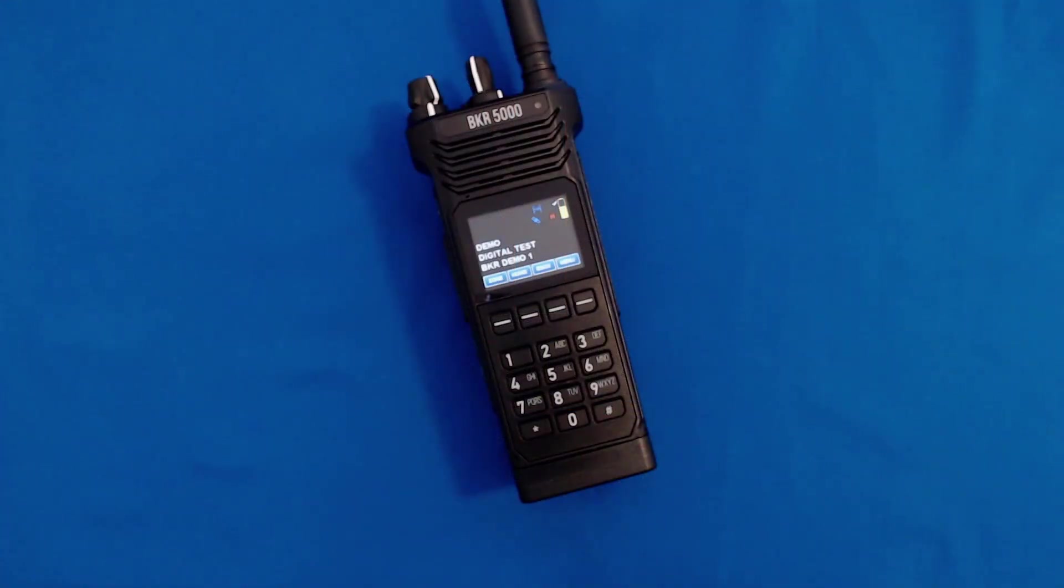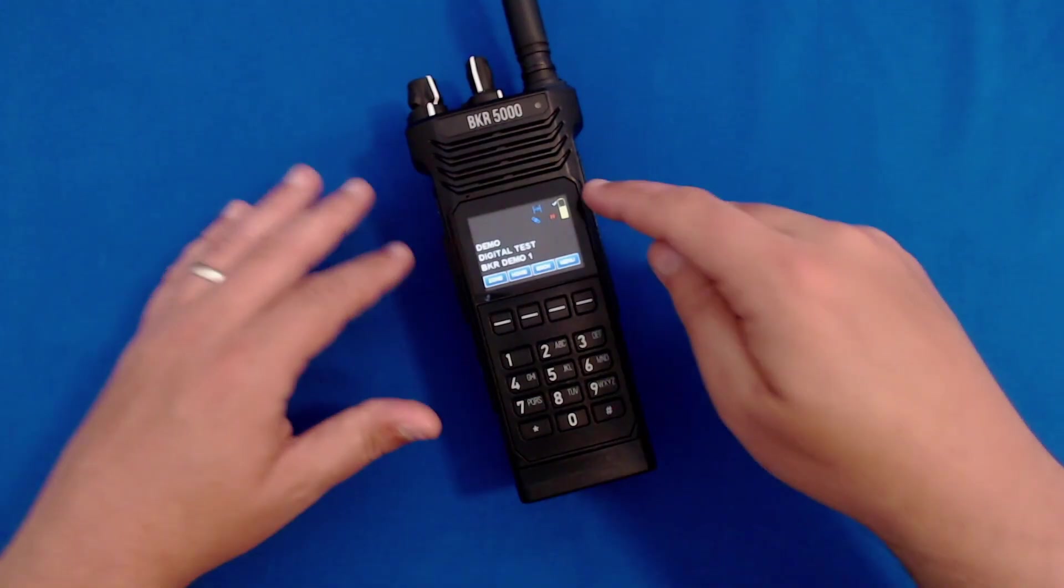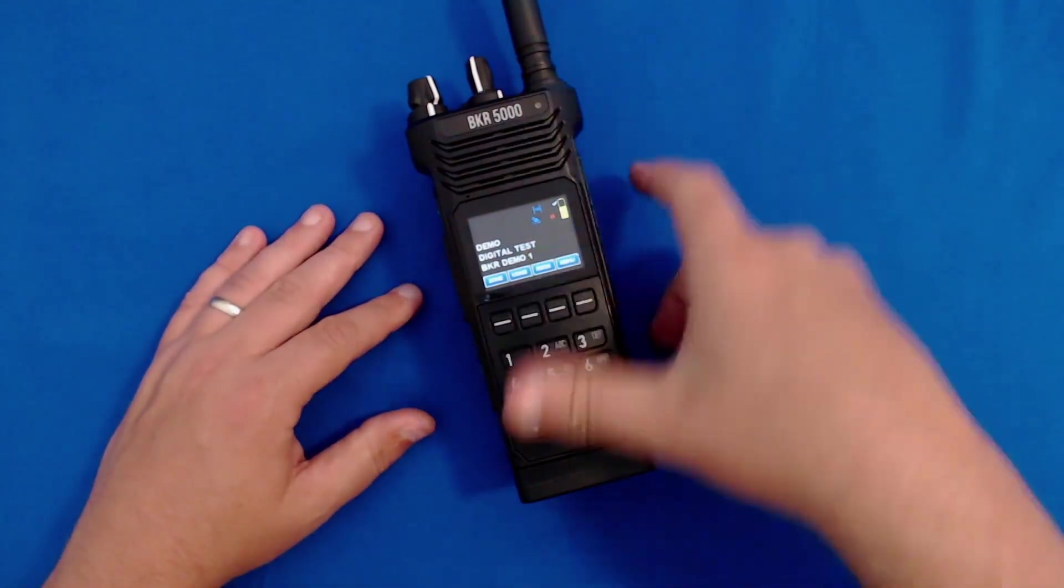This is Clint Roland with BK Technologies, here with an introduction to our new VHF radio, the BKR 5000. We've made quite a few changes from the KNG. We added a nice color display and an extra loudspeaker.